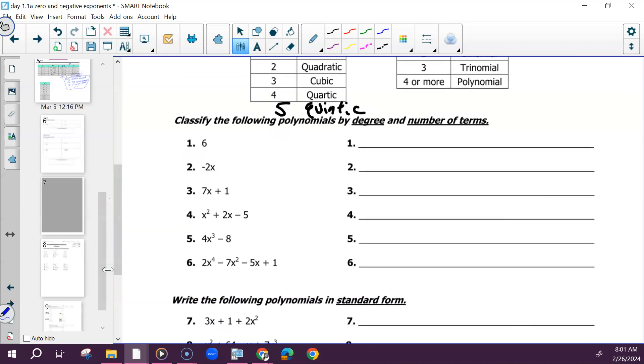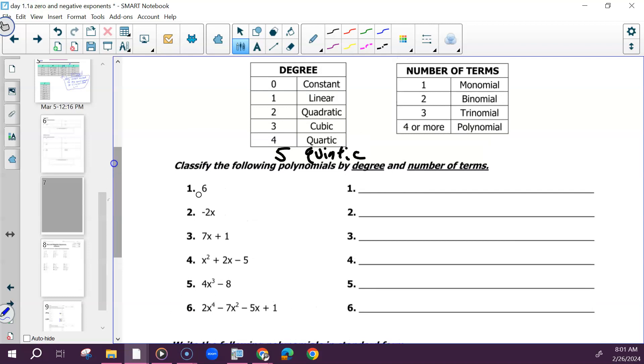All right, so let's classify some of these. Number one, let's do degree first. Would this be constant, linear, quadratic, cubic, quartic, quintic? Quadratic. And then number of terms. One. Monomial. What about number two? This one would be linear because I have the x. And number of terms. This is just one term. So monomial.